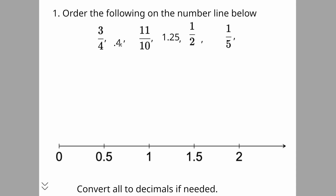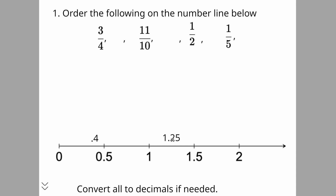So 0.4 — where is 0.4 going to fall? Well, 0.4 is less than 0.5, closer to 0, so we would put that about right here. Now 1.25 — that's obviously more than 1 but less than 1.5, so it's going to go right here in the middle.